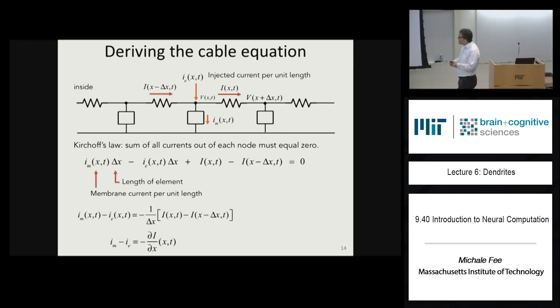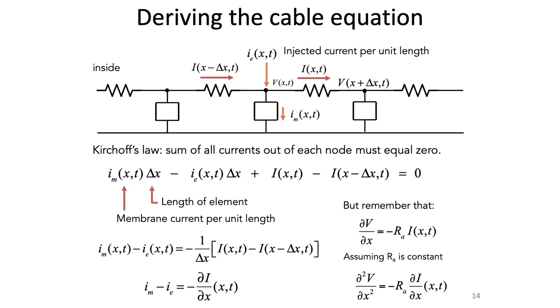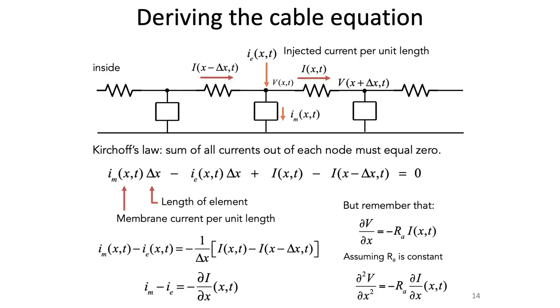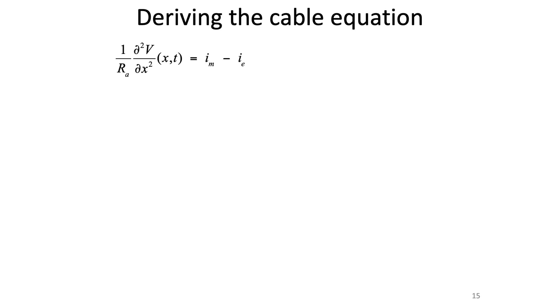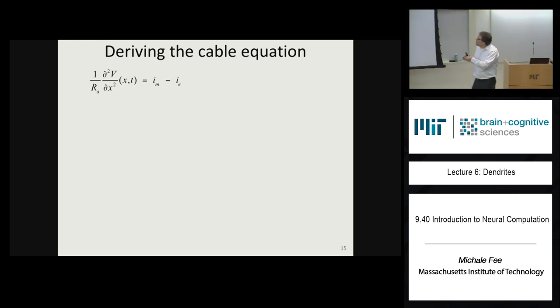We substitute using Ohm's law: taking the derivative of negative dV/dx = R_A times I with respect to position gives the second derivative of voltage with respect to position equals negative R_A times the first derivative of current. Substituting into the current equation gives us: the second derivative of voltage with respect to position equals R_A times the membrane or injected current. The curvature of the voltage depends on what's coming in through the membrane.